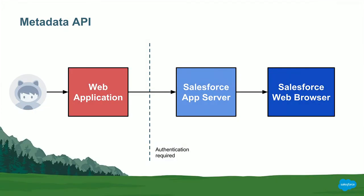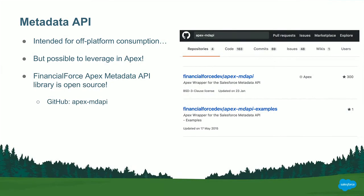Looking at this diagram: you have an external user connecting to an external web application, authenticating to connect to Salesforce, and then updating custom metadata. The Metadata API was intended to be used off-platform, but it's possible to use it within Apex because Apex allows callouts. If you set the endpoint to the Metadata API endpoint, you can do anything the Metadata API supports from within Apex. You can generate your own Apex class using the Metadata API WSDL to do that.